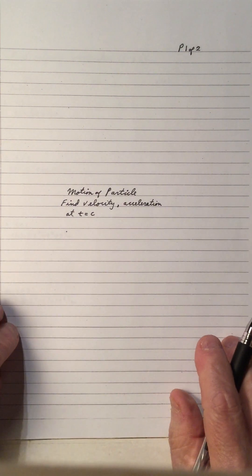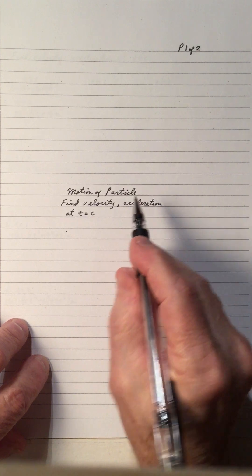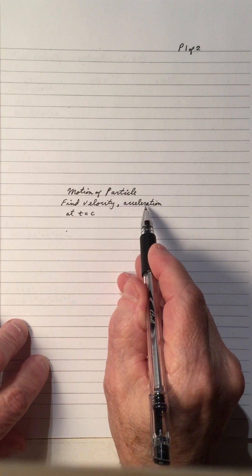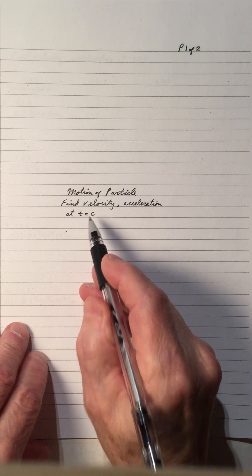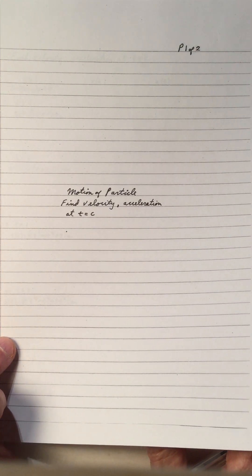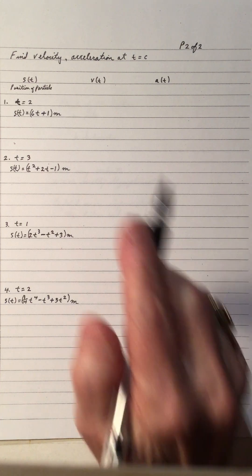Hi and welcome to my video on the motion of a particle in a straight line. In this video we're going to find the velocity and acceleration at t equals some value c. Here we go, some examples just to make sure you know what we're doing.